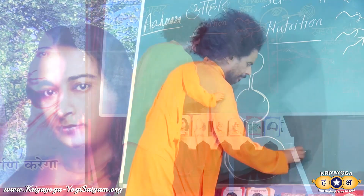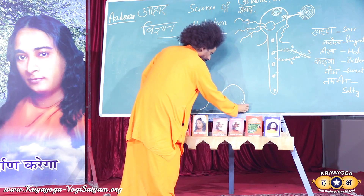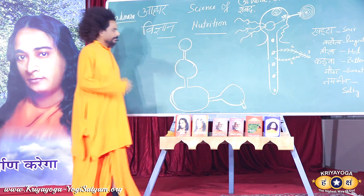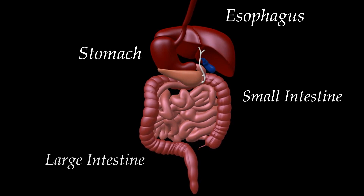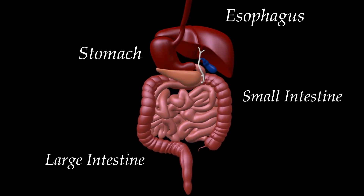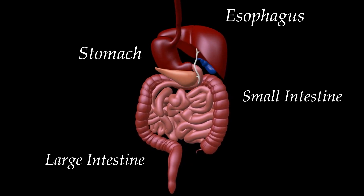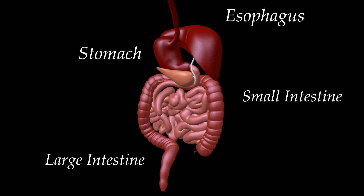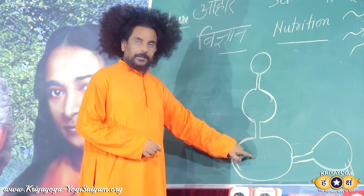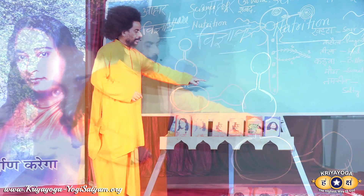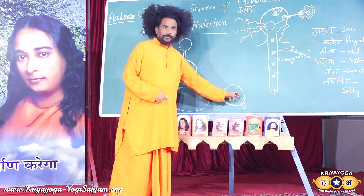Then from here food goes to the large intestine, and after that, defecation. This is the whole process. The food is going out. This is the mouth, this is the stomach, this is the small intestine, this is the large intestine, this is the rectum passage. Undigested food is going out.